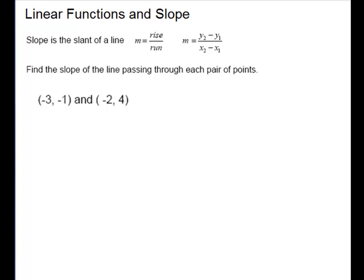Linear functions and slope. Slope is a measure of the slant of the line, how steep it is. The letter M is used to represent slope. It's also called the rise over the run or the vertical change compared to the horizontal change. As a formula, we put the difference in y's on top. That is the vertical change. You have to go in the same direction with the x coordinates. That is your horizontal change or your run.